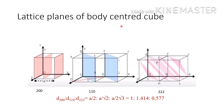For body centered cubic, the 200 plane is present because a body-center atom requires an inserted plane between the 100 planes. The 110 plane needs no additional plane as it passes through both corner and body-center atoms. For 111, an additional plane (222) is needed to cover the body-center atom. The ratio d_200 : d_110 : d_222 = a/2 : a/√2 : a/(√2·√3) = 1 : 1.414 : 0.577.